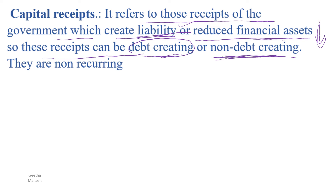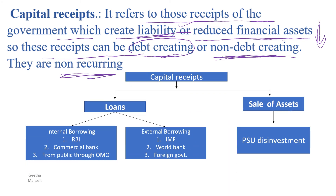Capital receipts are non-recurring. Capital receipts have two divisions: loans and sale of assets. Loans are debt-creating and non-debt-creating categories are distinguished.